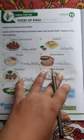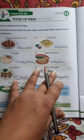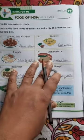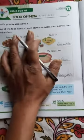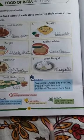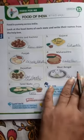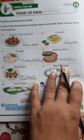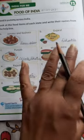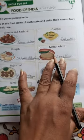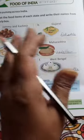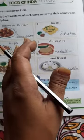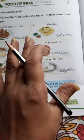Good morning everyone, I hope you are doing well. Open your GK book, Lesson 12: Food of India. This chapter is on page number 16. In this chapter we are going to study about the different dishes and different food items — foods from different places that are specific to those regions.